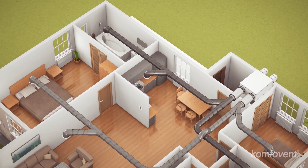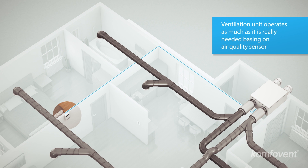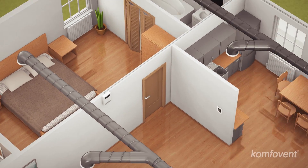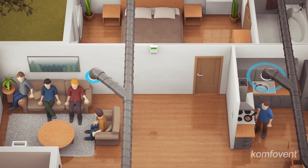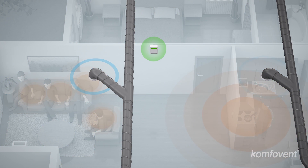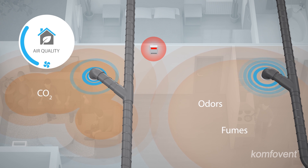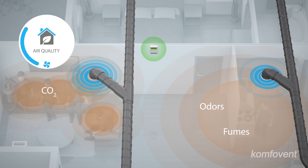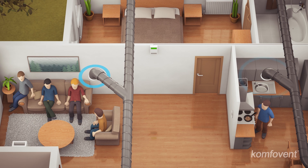With air quality sensors, the air handling unit operates as long as necessary in order to maintain the required air quality. No need to worry about weekly schedules or adjustment of ventilation intensity — Smart Control will do it for you. An air quality sensor responds to the number of people in the rooms, or to any fumes and odors, maintaining a comfortable and healthy environment with high accuracy. The sensor sends signals, and the ventilation automation effectively controls the air flow. With fresh air, the ventilation intensity is reduced or turned off, thus saving energy.